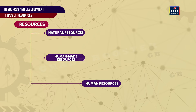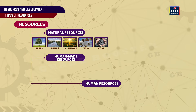Natural Resources. The resources that are found in nature are called natural resources. For example, trees, rivers, sunlight, wind, and coal.